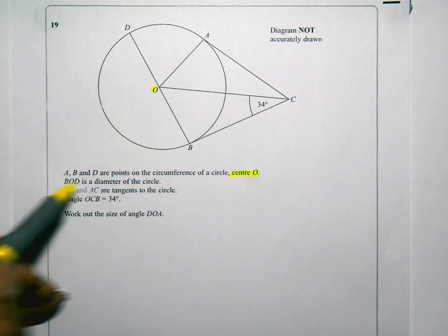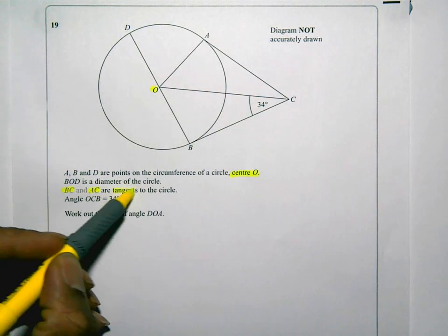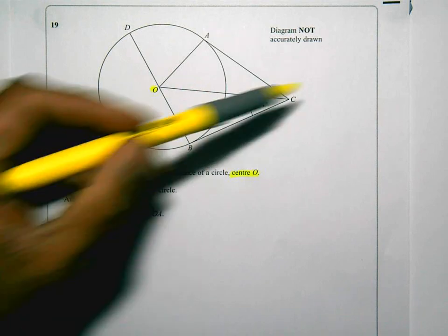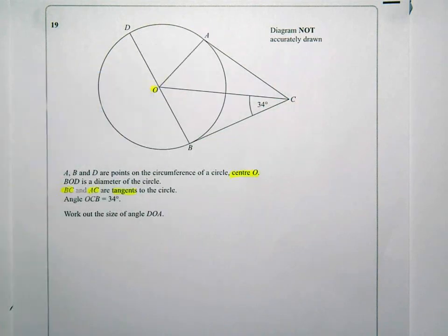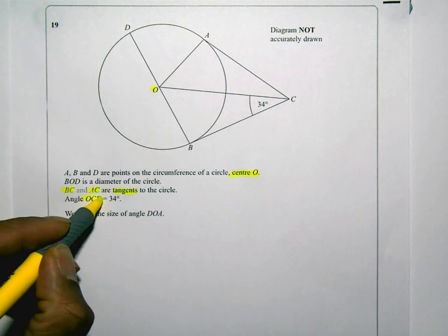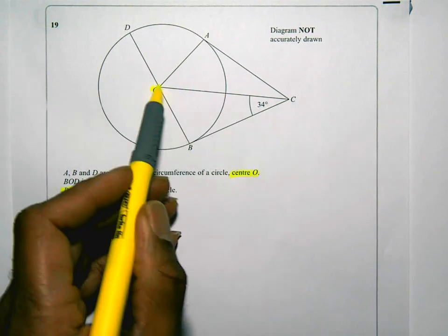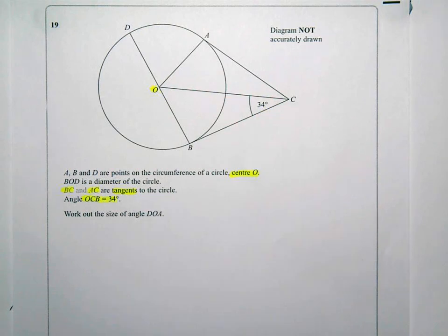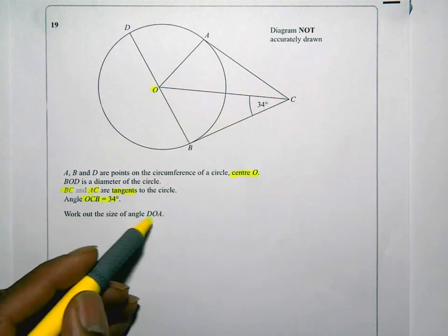BC and AC are tangents to the circle. So BC and AC are tangents to the circle. Angle OCB is 34. So OCB is 34 degrees. Work out the size of the angle DOA. So DOA.